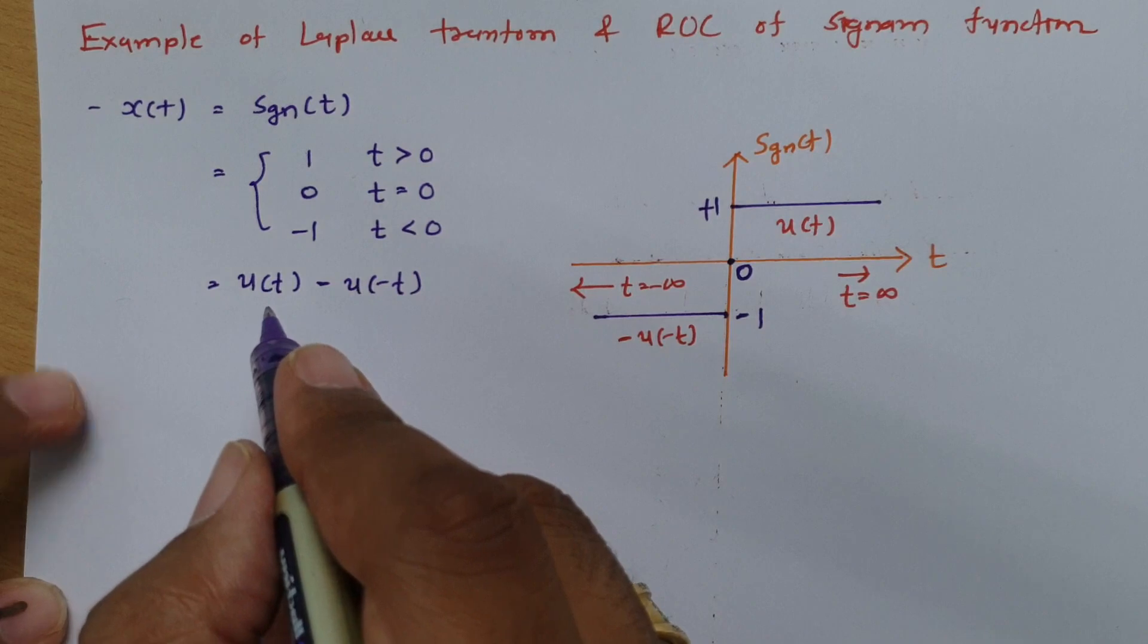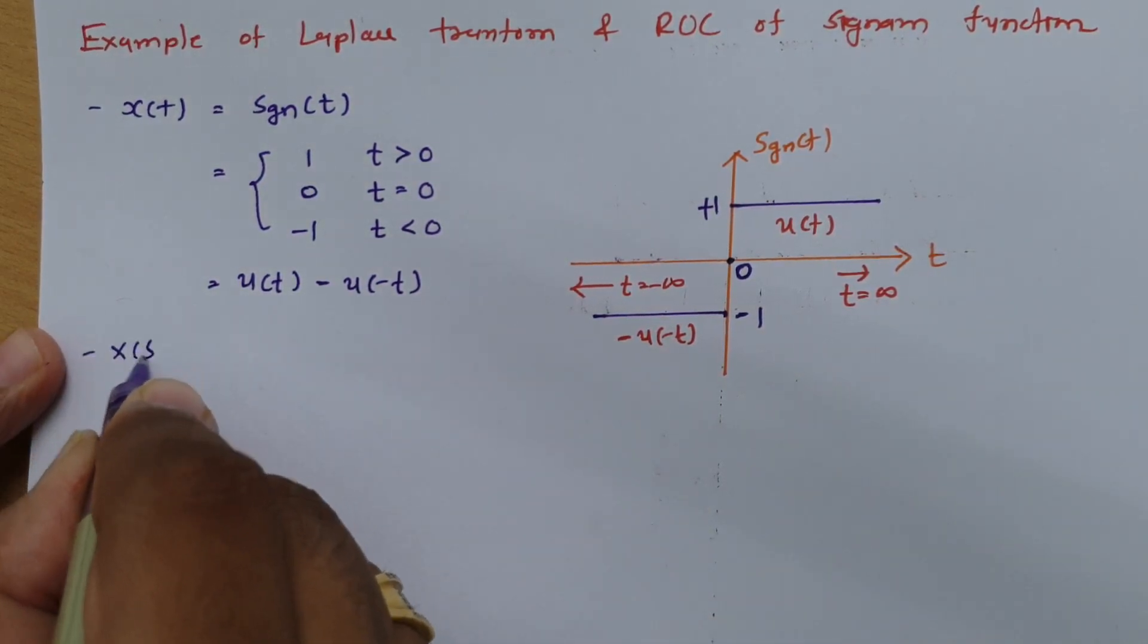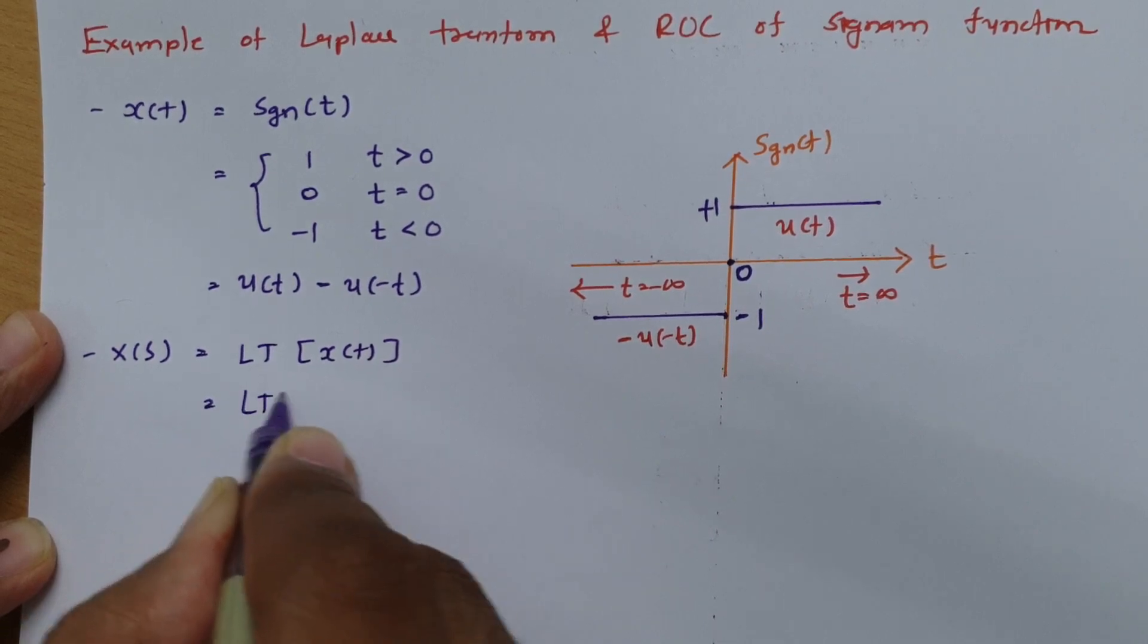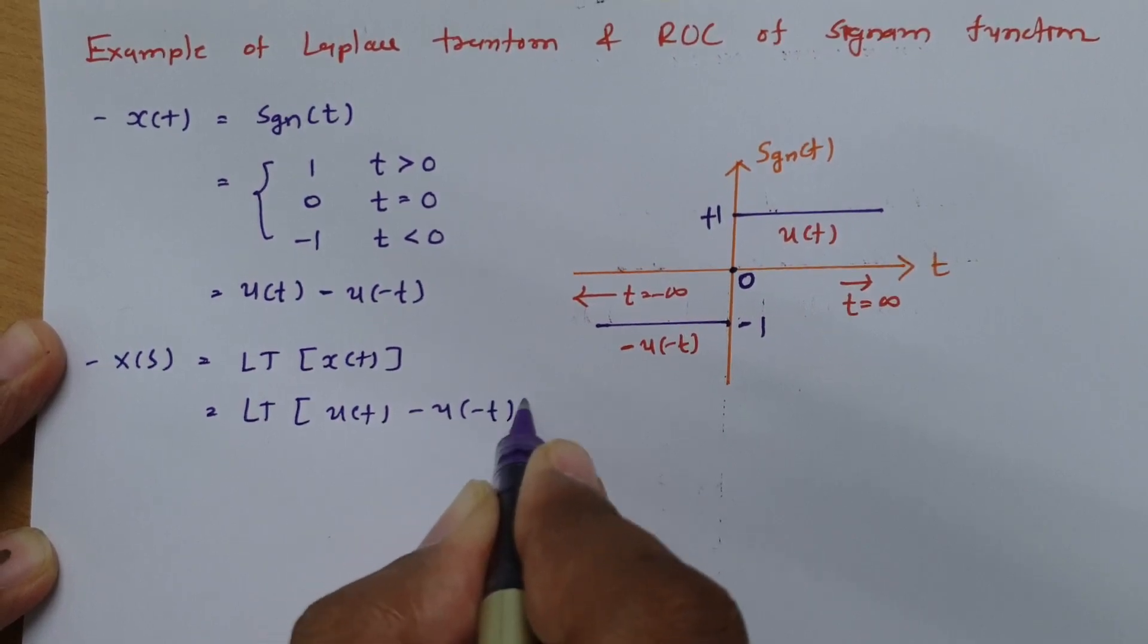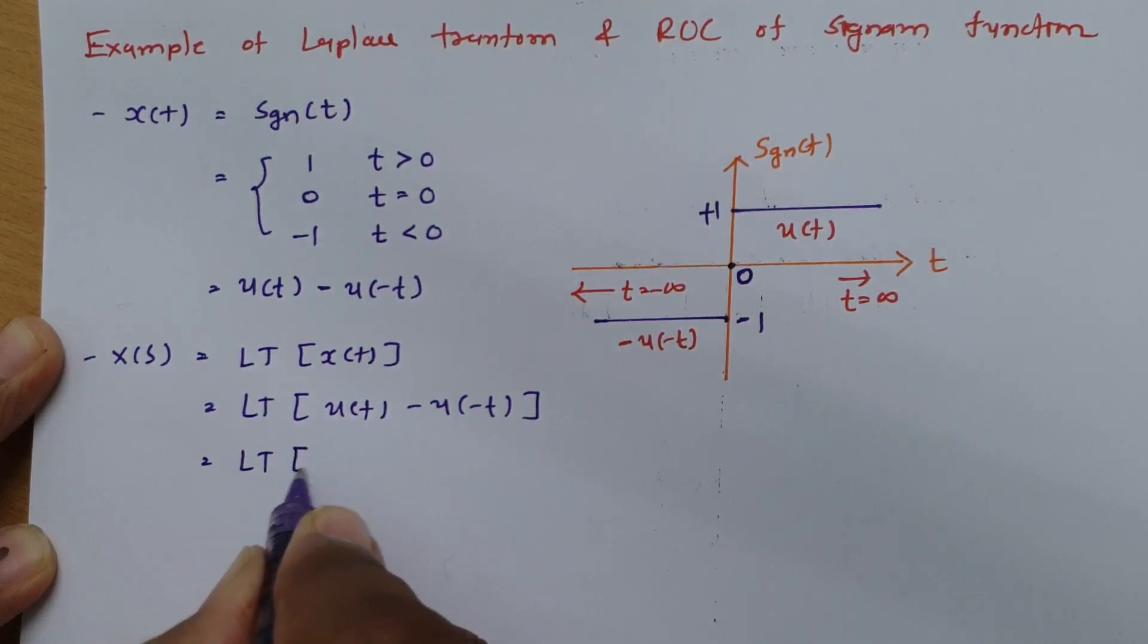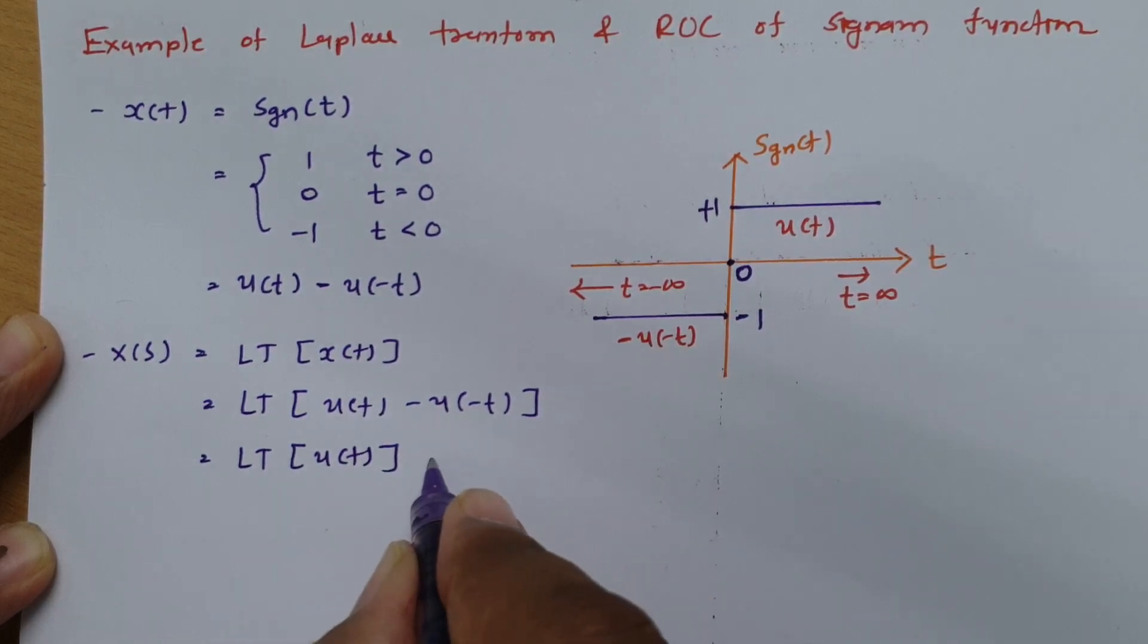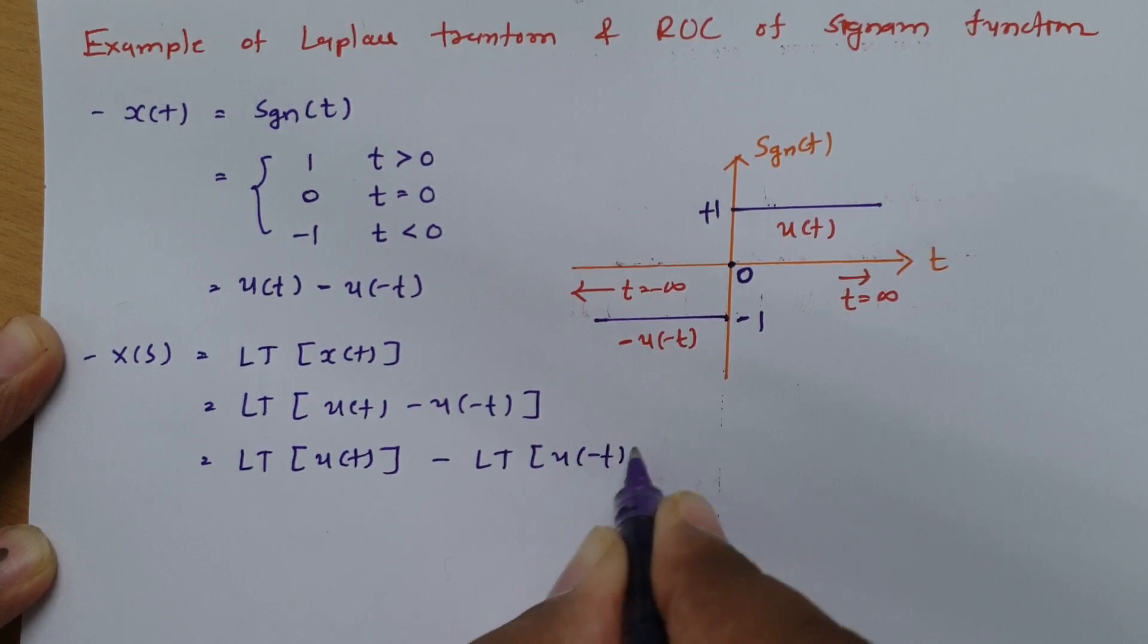Now we can find Laplace transform of this signum function. So Laplace transform of signum function is x of s that is we can write now x of t is u of t minus u of minus t. So by applying linearity property we can say separately we can have a calculation of Laplace transform for these two signals. So I am doing it separately.